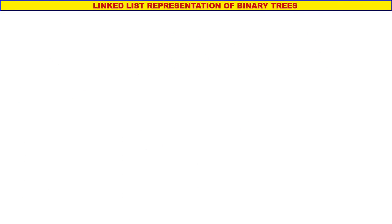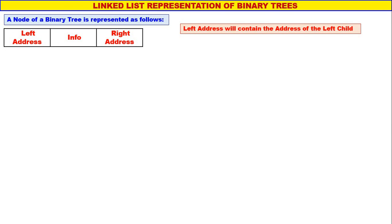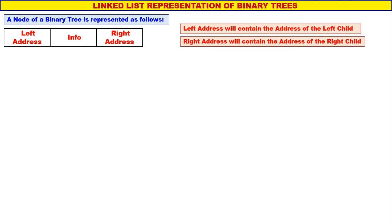Now let us go to the linked list representation of binary trees. A node of a binary tree has three parts: the middle part contains the information, the left part contains the address of the left child, and the right part contains the address of the right child.